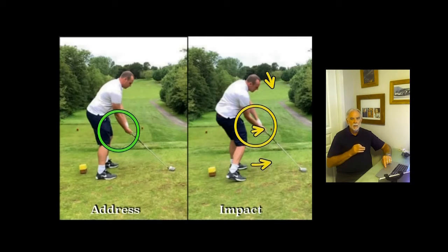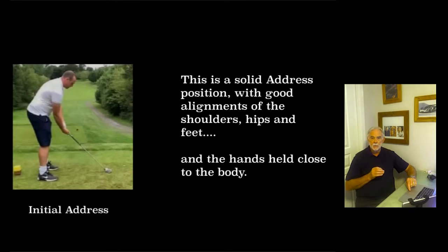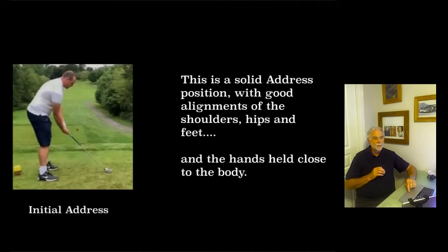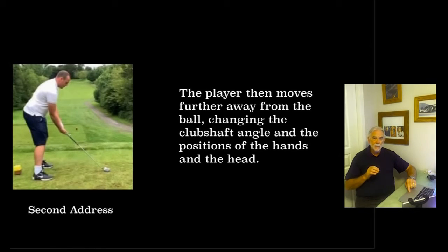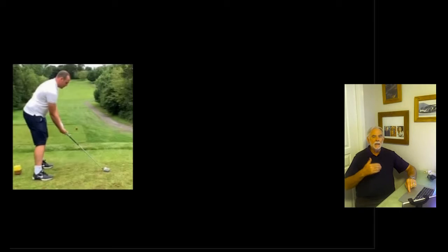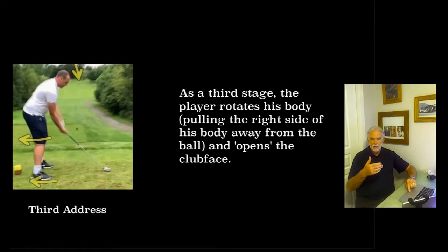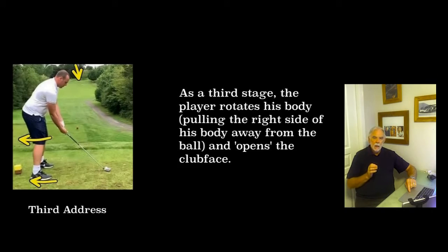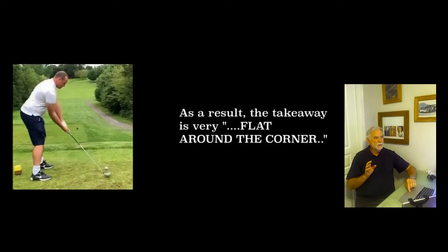Now this has been caused essentially by the stance of the player. He starts with a good address position — no big problems with that at all. The alignment of the shoulders is good, the hips and the feet and the hands are held close to the body. But he makes a series of adjustments without perhaps realising it. He moves away from the ball into a second address position, changing the club shaft angle and the hands, and then he moves again as a third stage, rotating his body, pulling the right side away from the ball and then opening up the club face by raising his leading arm.